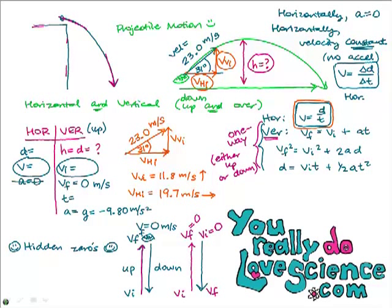Once you break down that initial 23 m/s velocity into the horizontal and vertical components, you're done with it — cross it off, because it's a mixture of horizontal and vertical and is not useful by itself. We found the vertical initial velocity to be 11.8 m/s and the horizontal initial velocity to be 19.7 m/s.